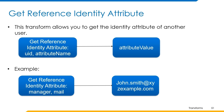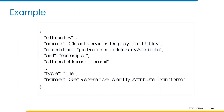Now let's understand how we can build a transform using this operation. The example can be built in this format where the name of the transform is get reference identity attribute transform and type is rule. It requires the name of the referenced rule to be cloud services deployment utility and the operation must always be set to get reference identity attribute. We provide the UID of the user whose identity attribute needs to be retrieved — here manager is given as UID — and the attribute name is email, so the manager's email value will be retrieved.